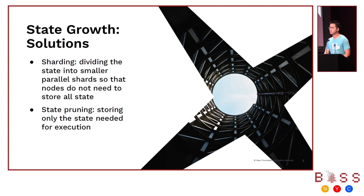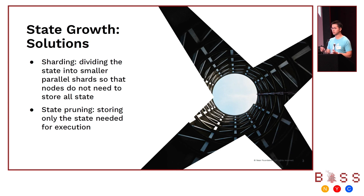This is also not a new problem — it's pretty much existed from day one of smart contract-based blockchains. Generally people have discussed two different directions to addressing this problem. One direction is sharding: on a high level, you want to divide the state of the entire blockchain into different shards, and each shard only has a small piece of the entire state, so that validator nodes don't need to store the entire state locally and the network can scale.